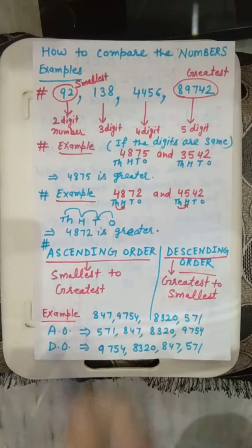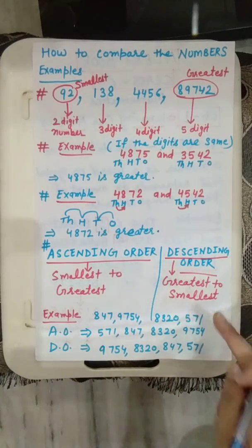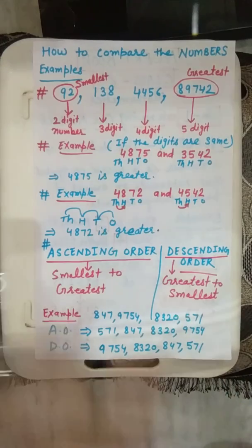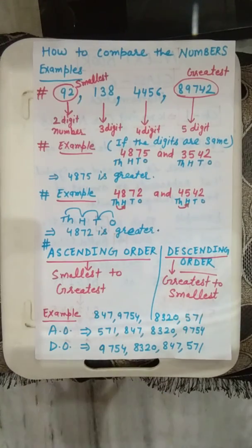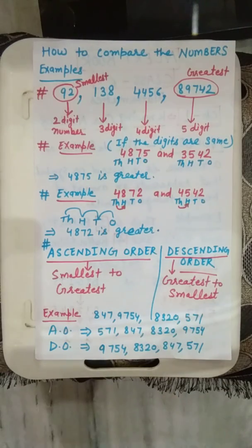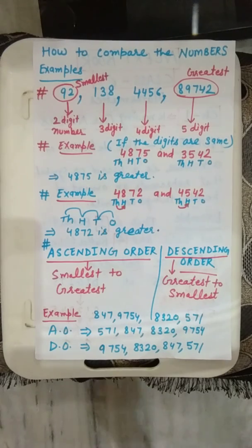So, ascending order means smallest to greatest — start with the smallest, then next bigger, then bigger, then biggest. Descending order means start with the greatest, then smaller, then smaller. I hope you liked my video and understood everything I have told you. We will continue in the next video. Enjoy and have a good day, friends. Thank you.